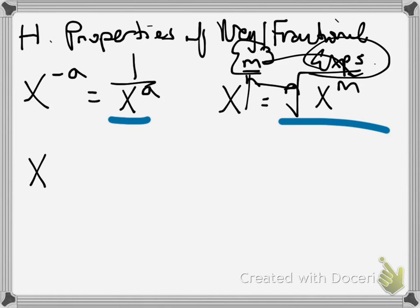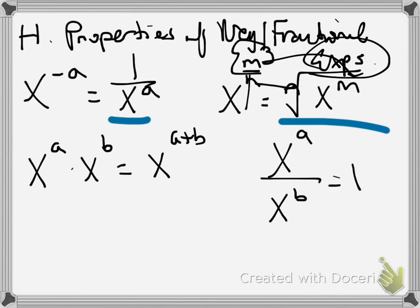But also don't forget some of the other properties of exponents. Remember when you multiply like bases, x to the a times x to the b, you add the exponents up and we get x to the a plus b. If you divide exponents of like bases, you subtract the power, so we get x to the a minus b.